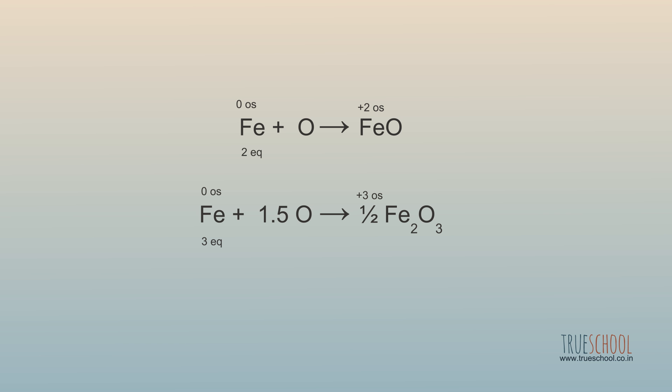Additionally, we can find n-factor of FeO and Fe2O3. One mole of FeO is 2 equivalent, hence its n-factor is 2. But half of Fe2O3 is 3 equivalent, so 1 mole is 6 equivalent for Fe2O3. Hence its n-factor is 6.